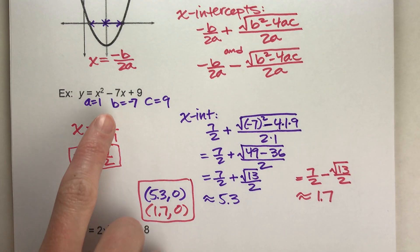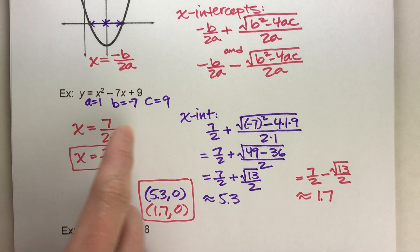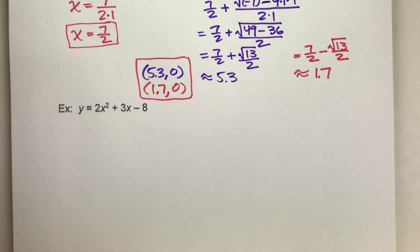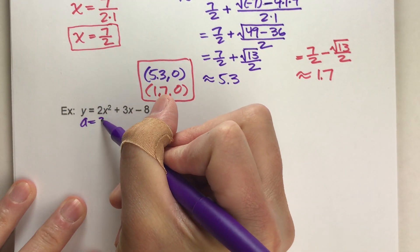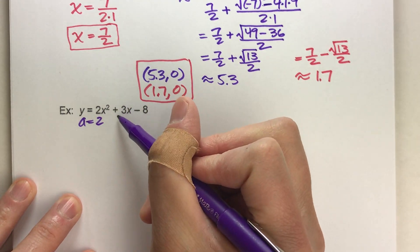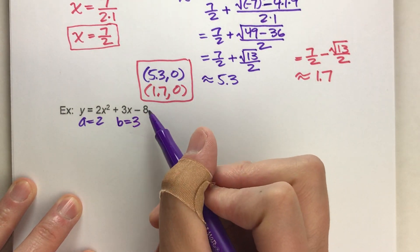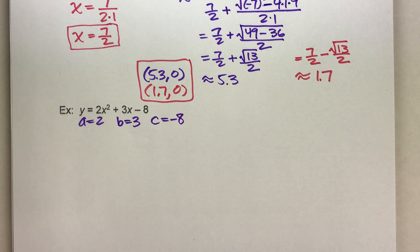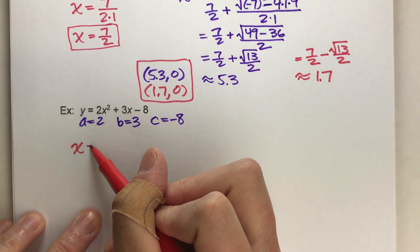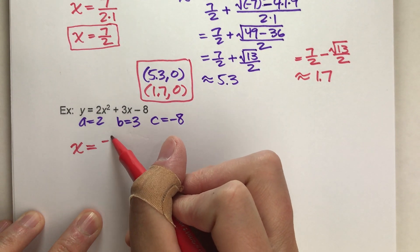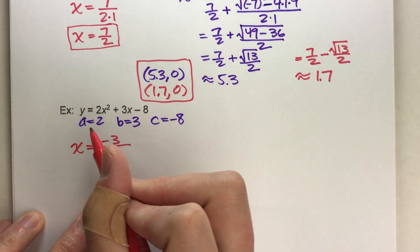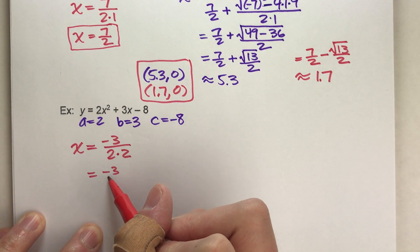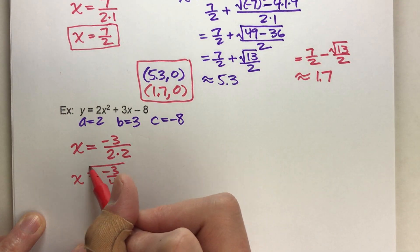Let's do another example that's slightly harder, because in this one the number in front of x squared is not 1 — it's 2 — which adds a little complexity. The number in front of x is a positive 3, so b equals 3. And the constant term at the end is negative 8, so c is negative 8. Starting with the axis of symmetry: x equals negative b, so negative 3, divided by 2 times a, which is 2. Simplified, that's negative 3 over 4.